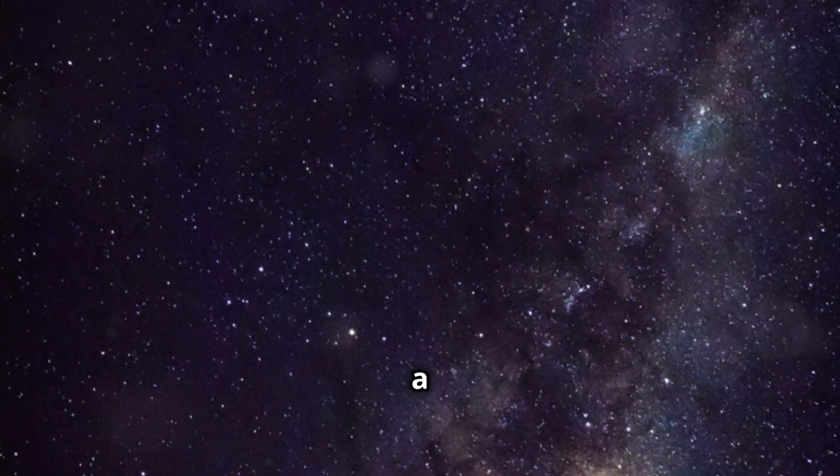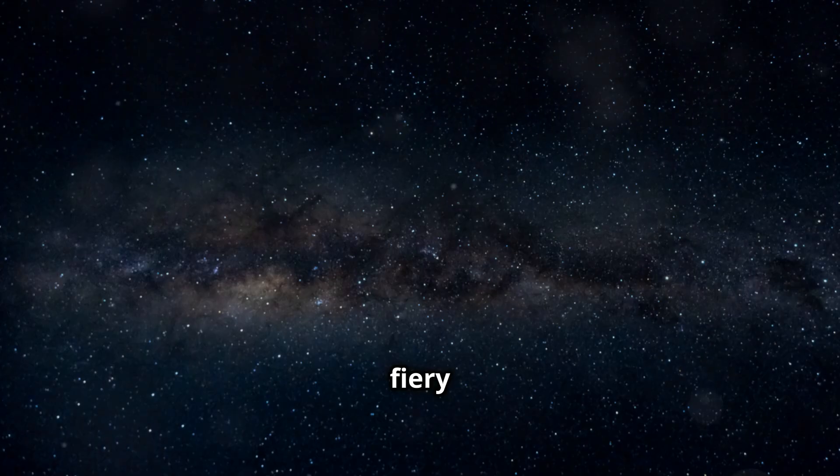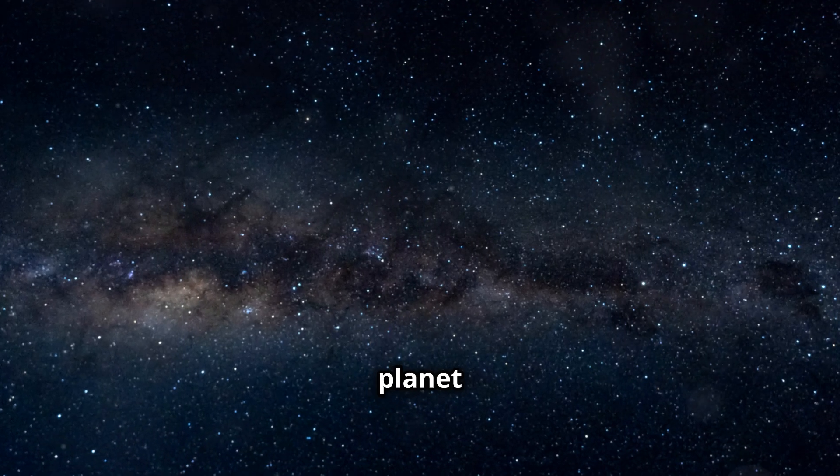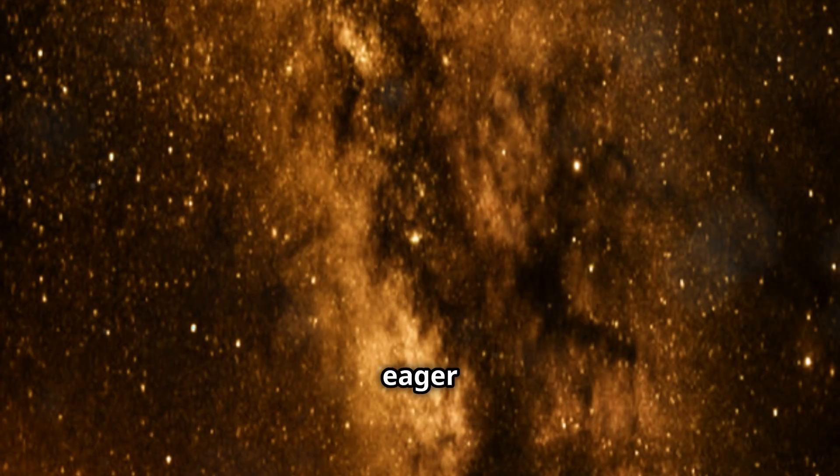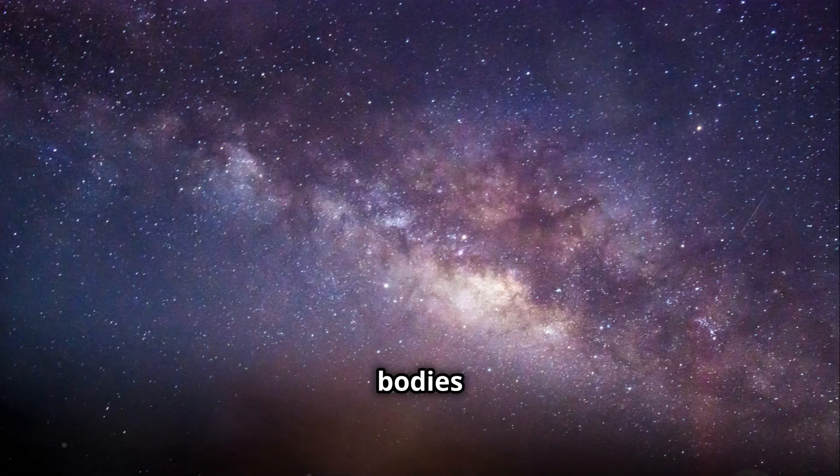The solar system is a vast and mysterious place, full of surprises waiting to be discovered. From the fiery surface of Mercury to the icy rings of Saturn, each planet holds secrets that scientists are eager to uncover. Beyond the known planets, the Kuiper Belt and Oort Cloud are teeming with icy bodies and comets, remnants from the early days of our solar system's formation.